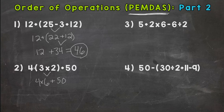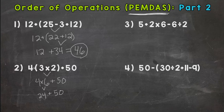Going through our steps: any parentheses? No. Any exponents? No. Multiplication or division? Yes — we have multiplication: 4 times 6 is 24. Then plus 50. And 24 plus 50 gives us 74. We showed all our work, took our time, went through our steps — good to go with number two.